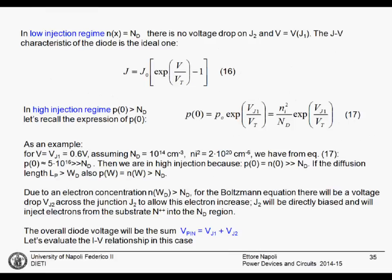When we are in the low injection regime, there is no voltage drop on J2, and the voltage on the diode is just the voltage on the J1 junction. The characteristic we measure is the ideal diode characteristic: the current density J is proportional to J0, the saturation current, multiplied by the exponential of the applied voltage divided by the thermal voltage, minus 1.